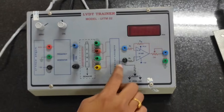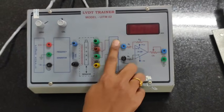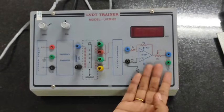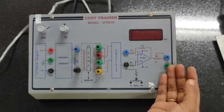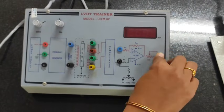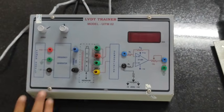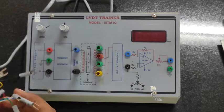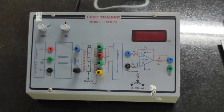The two differences will be given to this demodulator. Based on the change in position of core displacement, the output will be changed. The net output will be measured in this output. Now we are going to give the connections.